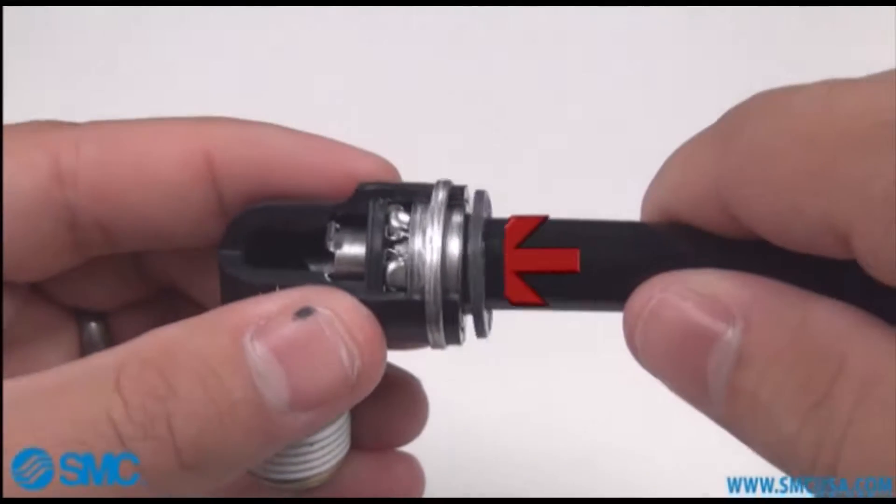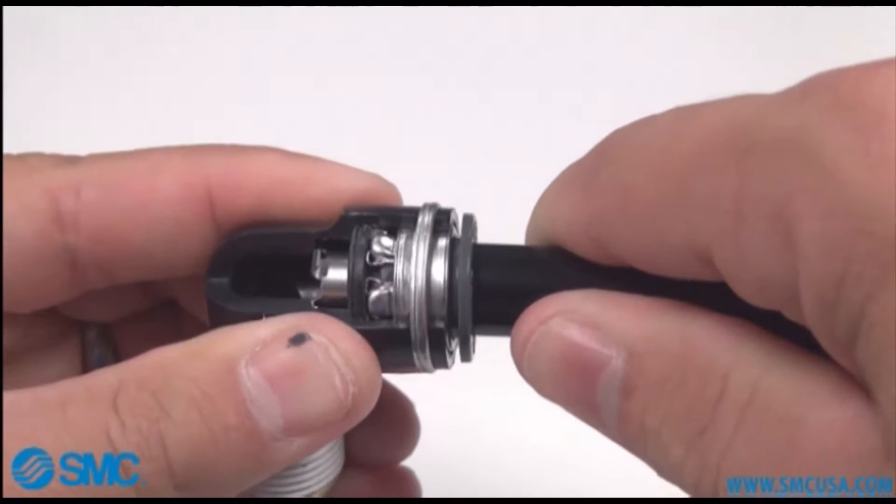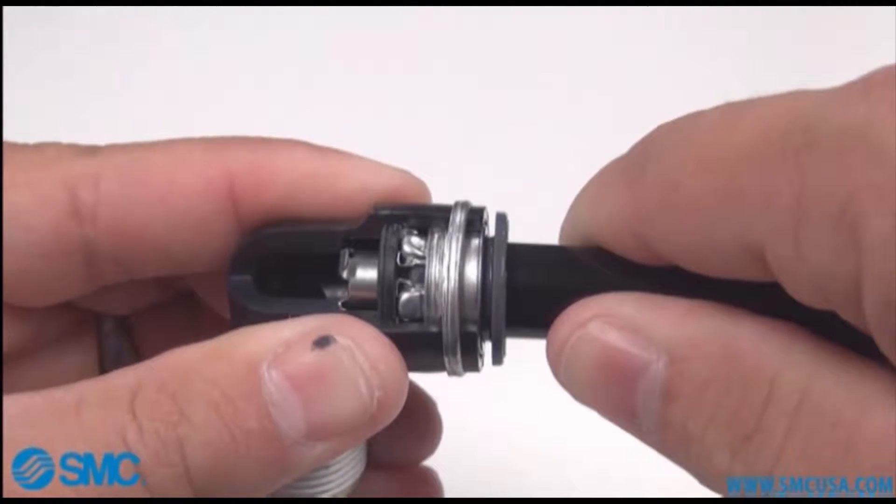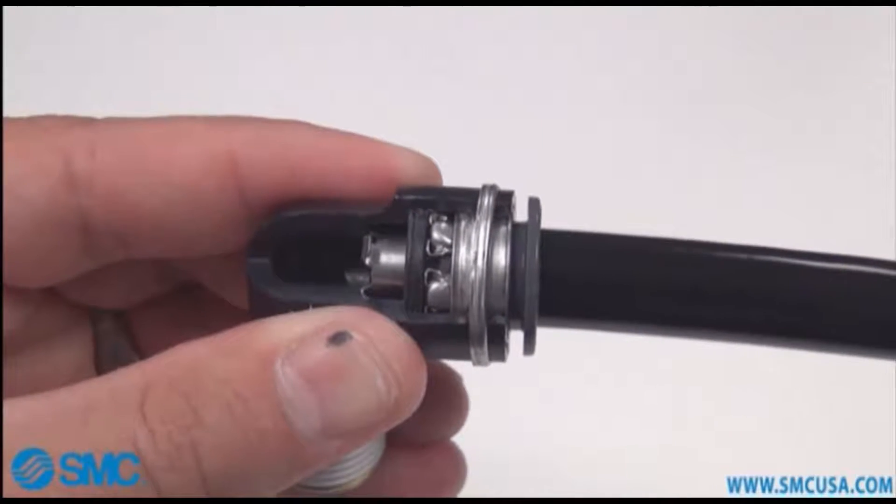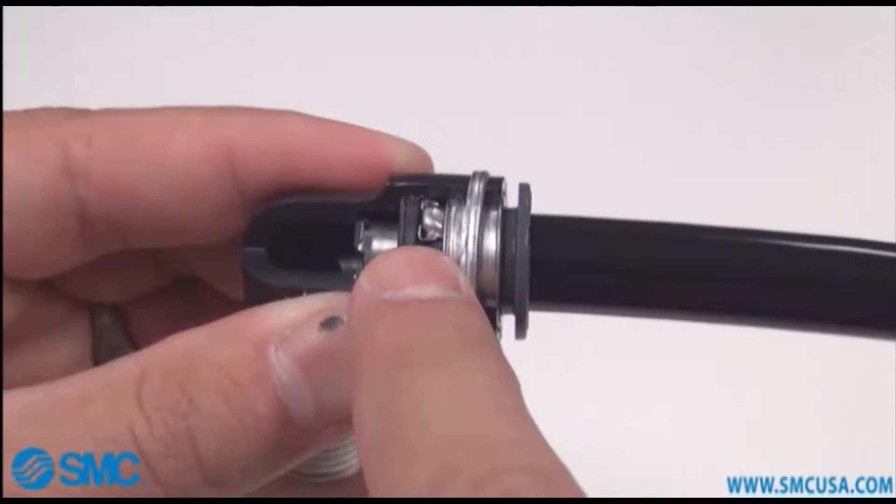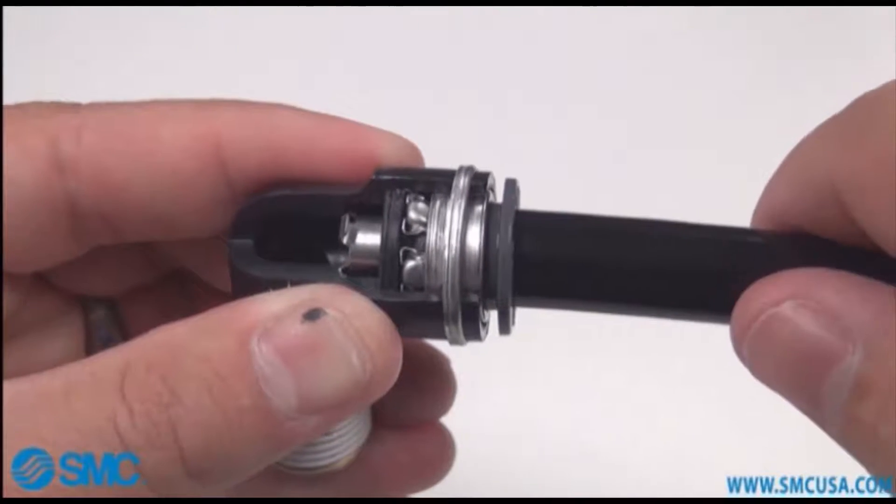First push the tube into the chuck seal. You will notice a slight resistance when the tube meets the chuck seal interface. Do not let this fool you into thinking that the tube has been fully inserted.